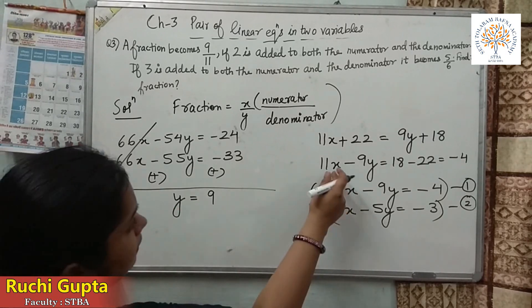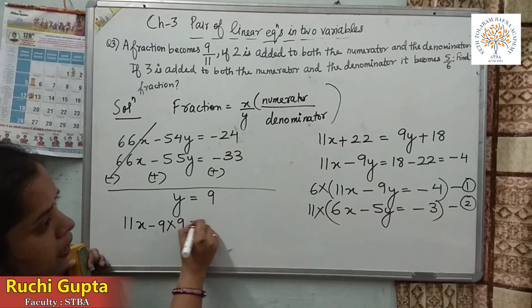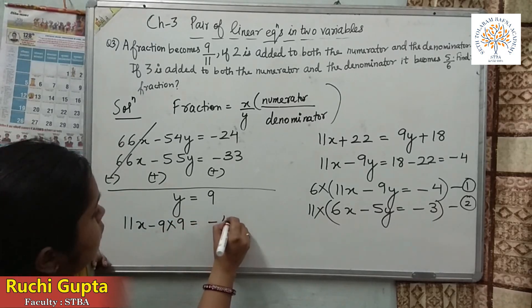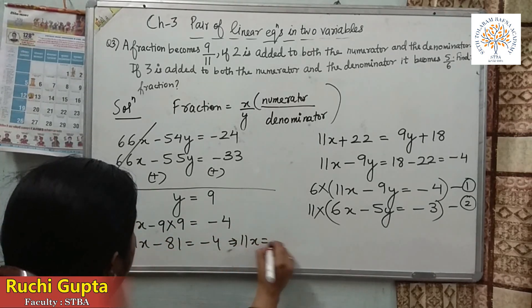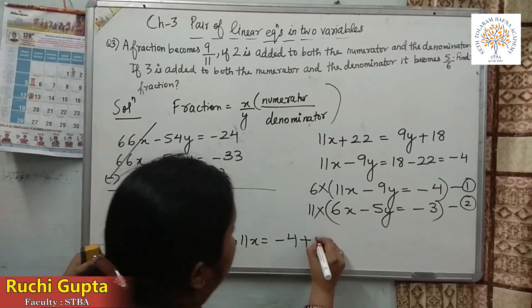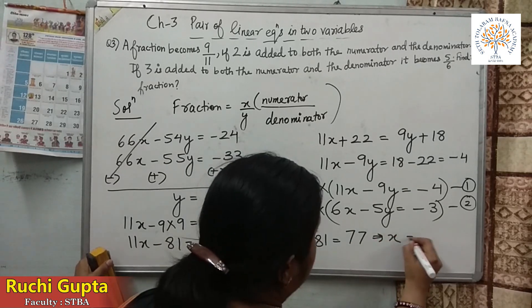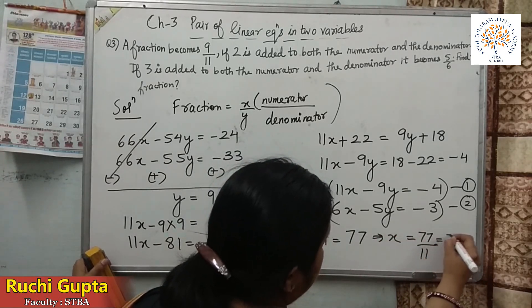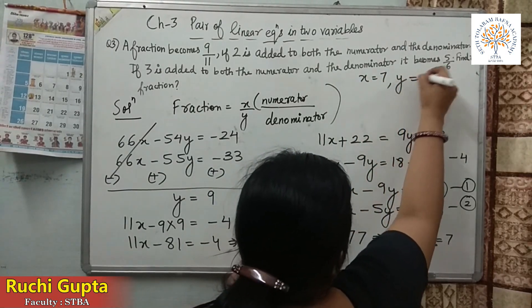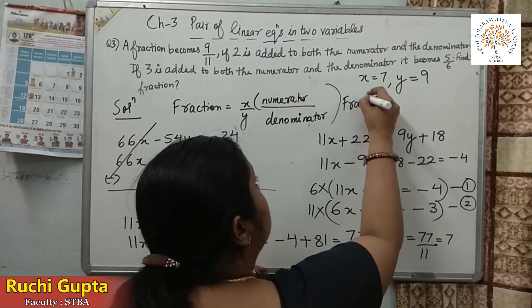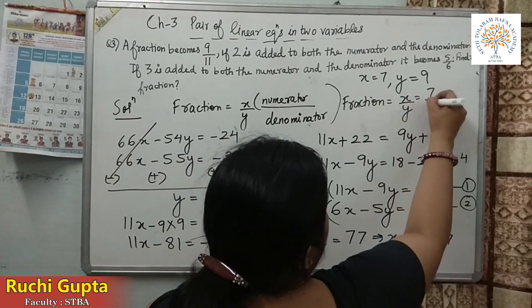To find X, substitute Y equals 9 into equation 1: 11X minus 9 times 9 equals minus 4, so 11X minus 81 equals minus 4, giving 11X equals 77. Therefore X equals 77 divided by 11, which is 7. The value of X is 7 and the value of Y is 9. So our fraction is X upon Y, which is 7 upon 9.